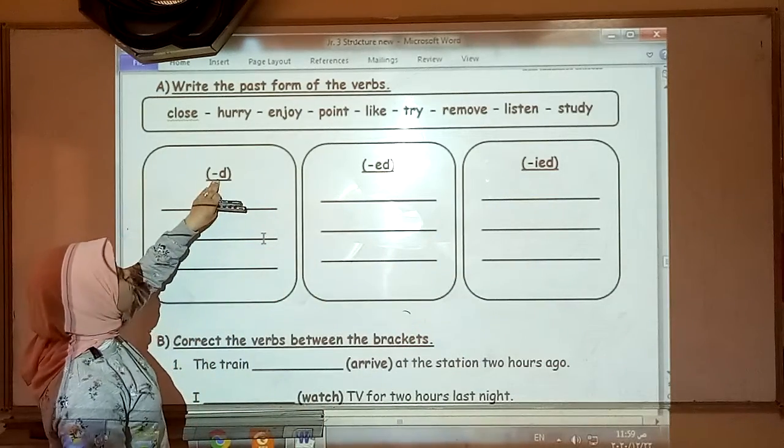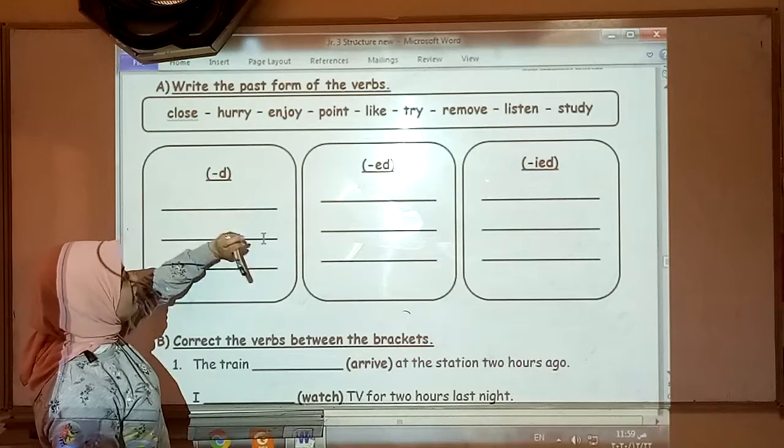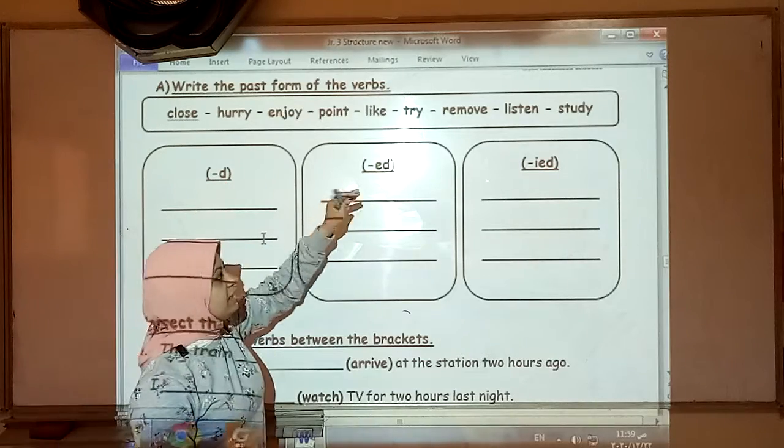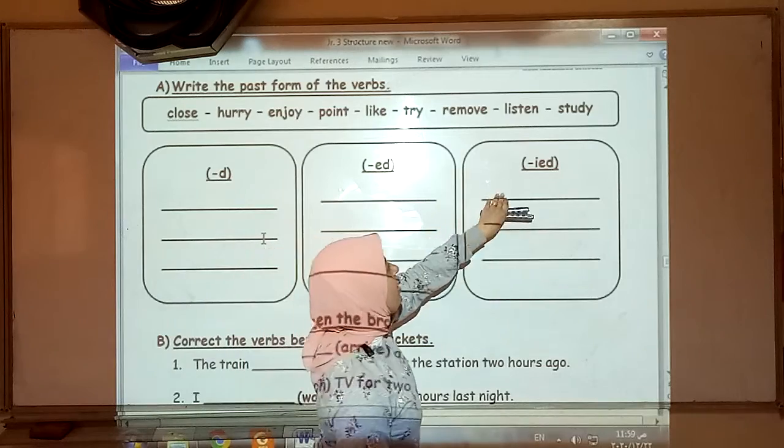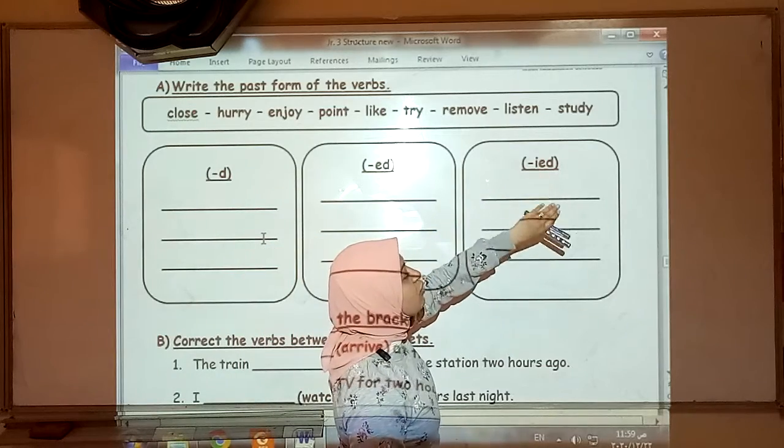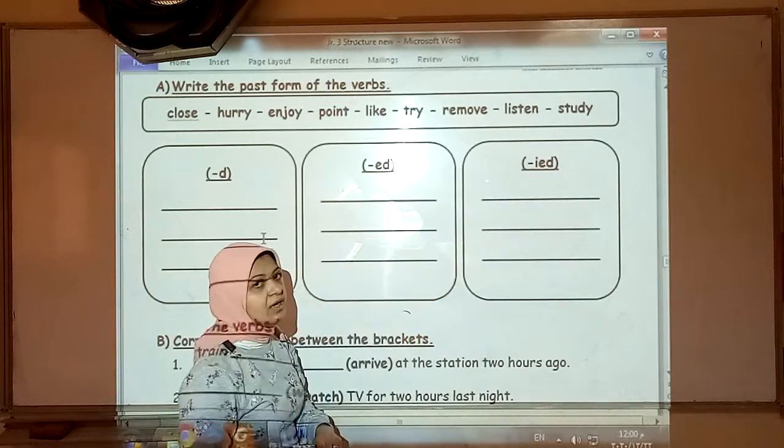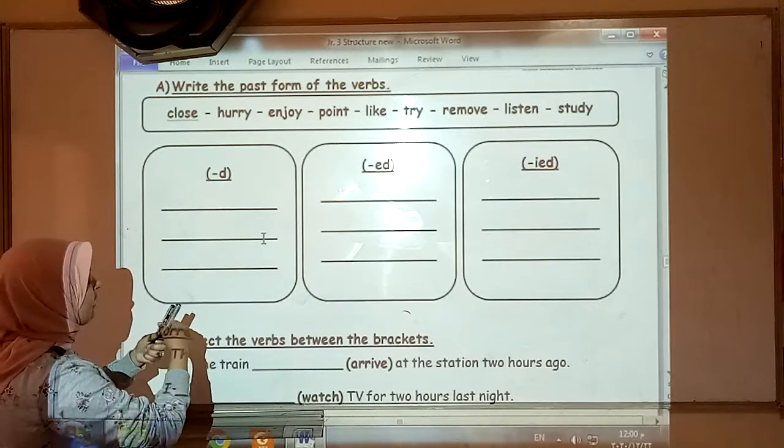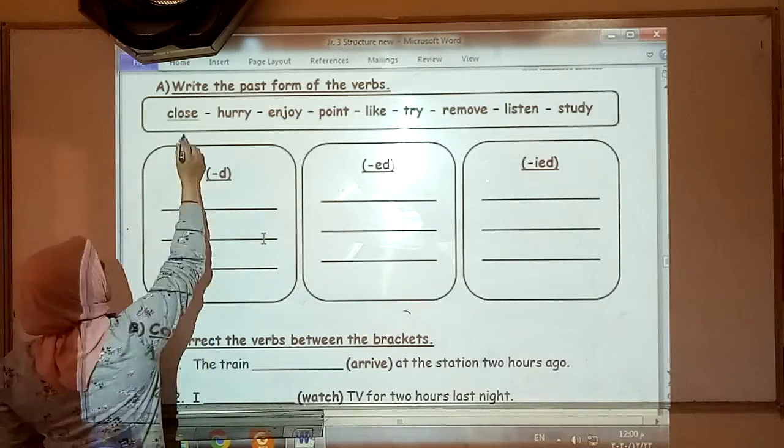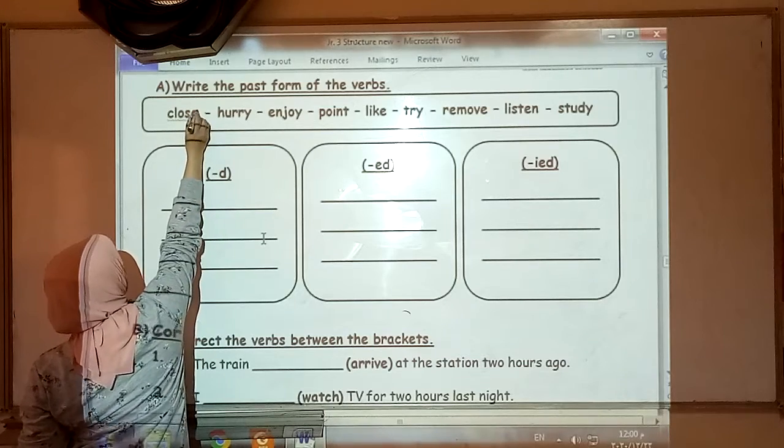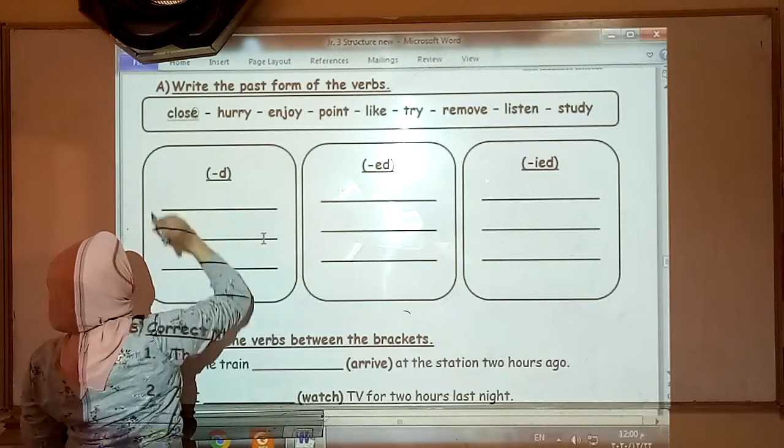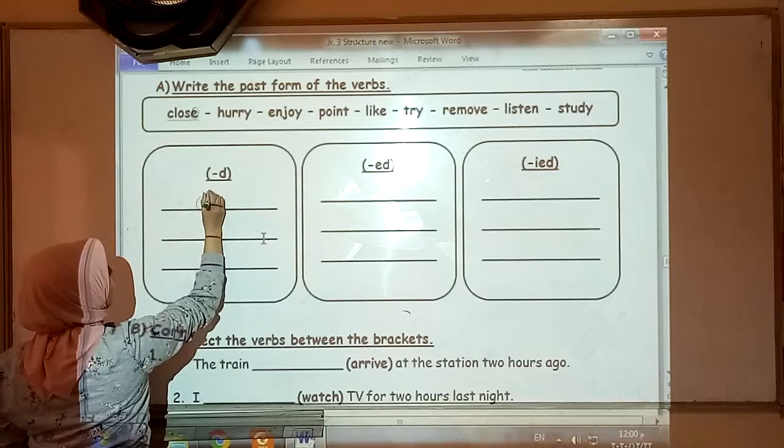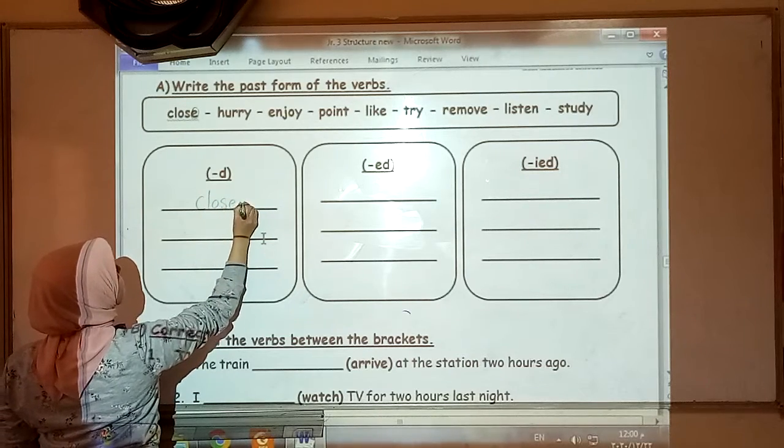As I told you, we add D only if the verb ends in E. ED in the normal form. IED if the verb ends in Y and previous to it is a consonant letter. Adding D, let's check. Here, the first verb is close. It ends in E, so we will put it here. Closed.